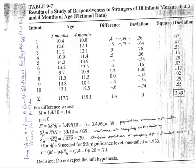The first thing that we do with this data is we determine the differences between their four-month score and their three-month score. So we subtract 10.4 from 10.8 and we generate a difference score of 0.4. We subtract 12.6 from 12.1 and we get a difference score of negative 0.5. We do that same calculation for all ten of these kids.